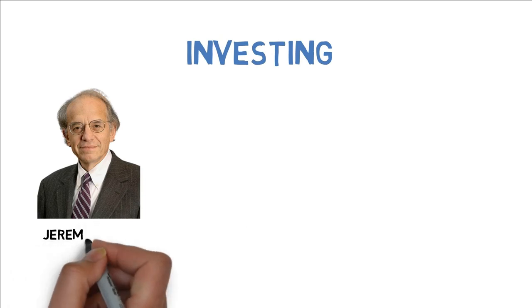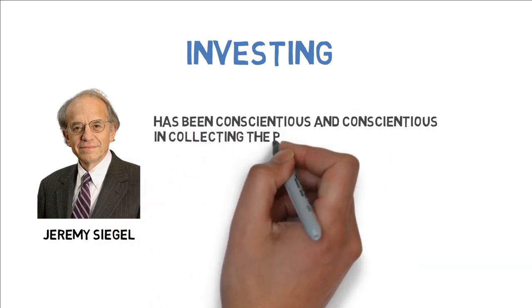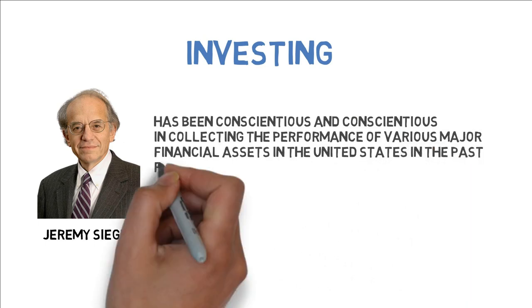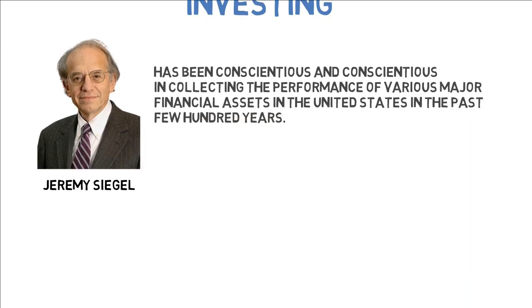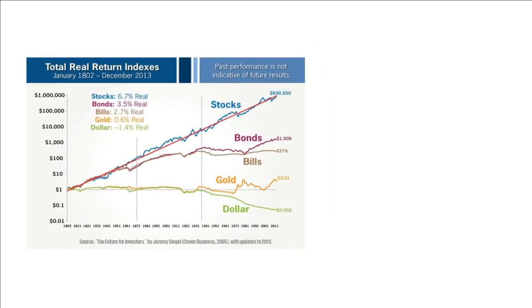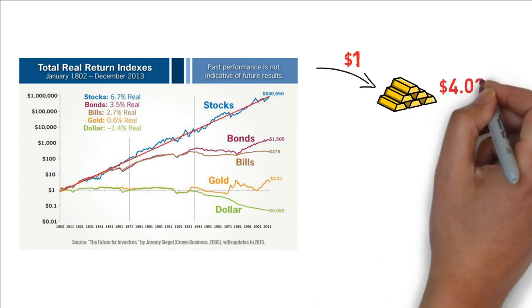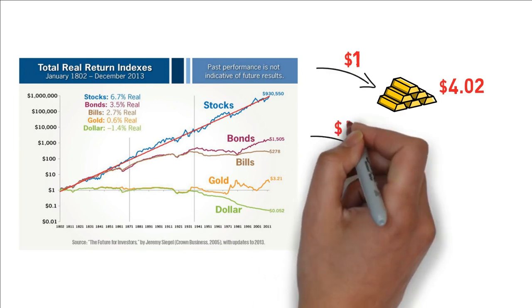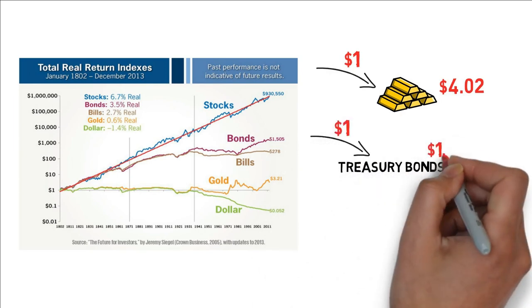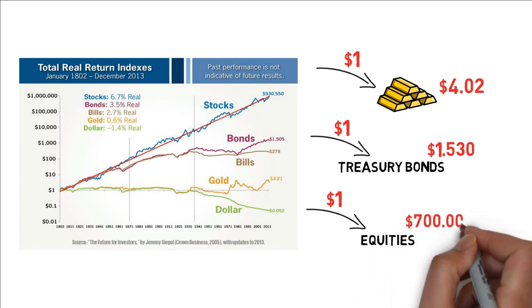Professor Jeremy Siegel of the Wharton School has been conscientious in collecting the performance of various major financial assets in the United States over the past few hundred years. The cornerstone of Siegel's research is this graph. Investing over 200 years, a $1 investment in gold would be worth just $4.02 today adjusted for inflation, a $1 investment in treasury bonds would be worth $1,530, while a $1 investment in equities would be worth $700,000. While the equity returns are overstated because Siegel does not adjust for taxes or trading costs, the basic conclusion is valid.